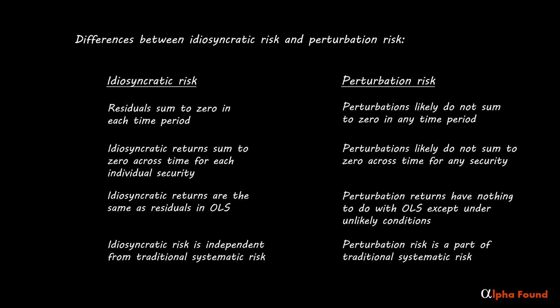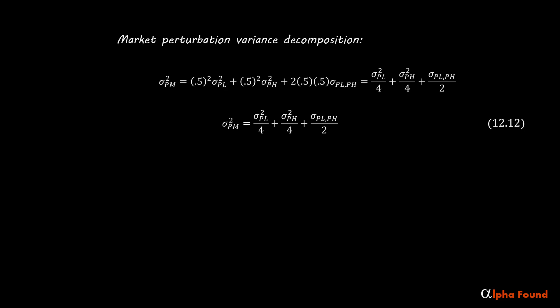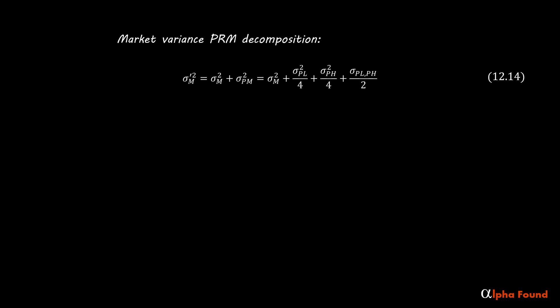Back to market perturbation risk. If an index is divided into two equally weighted pieces — the high CAPM beta portfolio and the low CAPM beta portfolio — then the formula for the variance of the market perturbation follows. For at least several videos, I am going to assume that the covariance between the perturbations is zero. This is not a good assumption; however, it keeps the calculations and reasoning clean and understandable. This assumption carries the story a long way forward before it needs to be discarded. After I have done what I can with it and it ultimately fails, it will be much easier to insert the more realistic and complex assumptions back in. And here is the market variance PRM decomposition.